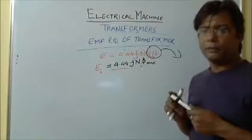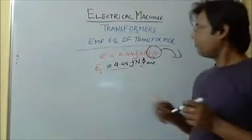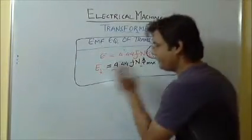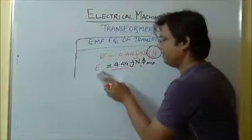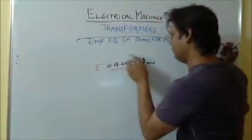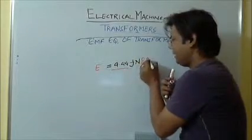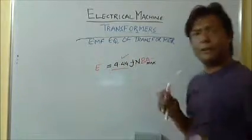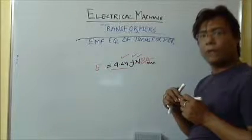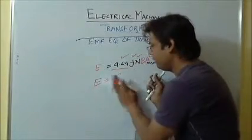B_max is the flux density and A is the cross-sectional area of the core. Now we are familiar with the EMF equation of the transformer. Looking at this equation, 4.44 is a constant, F for a given supply is also a constant, N is also a constant, and B is also a constant. Therefore, E is directly proportional to φ.